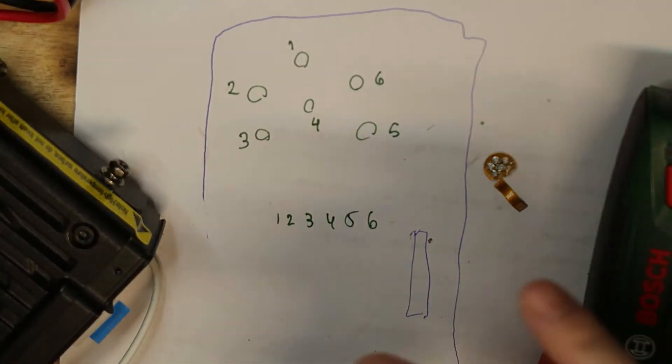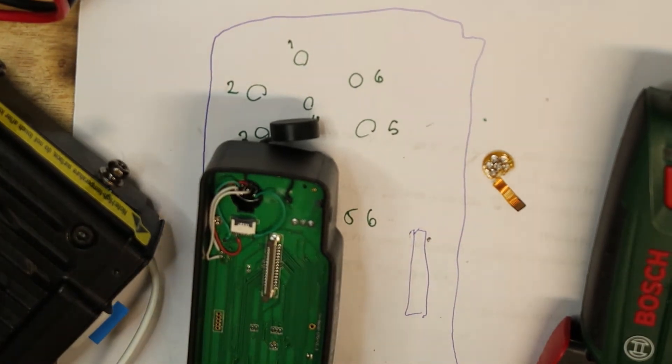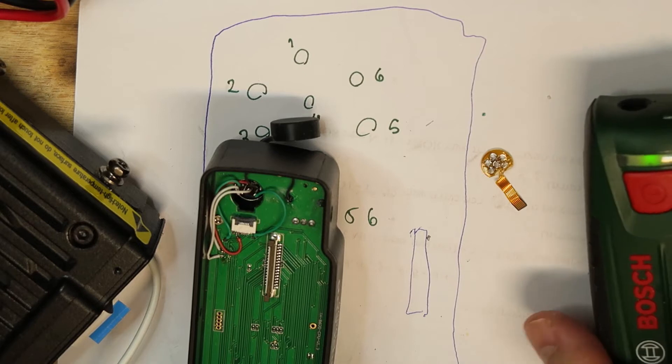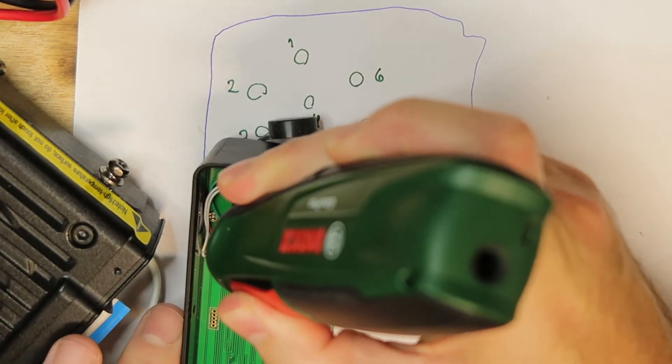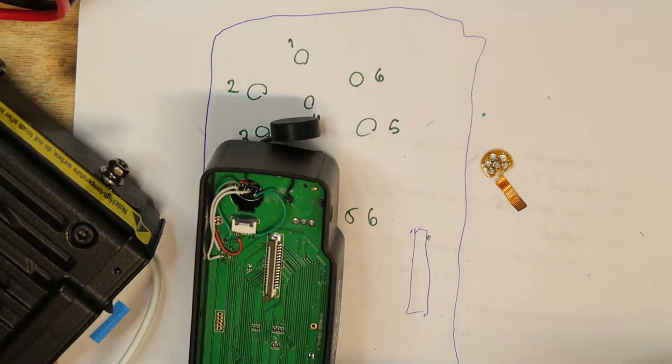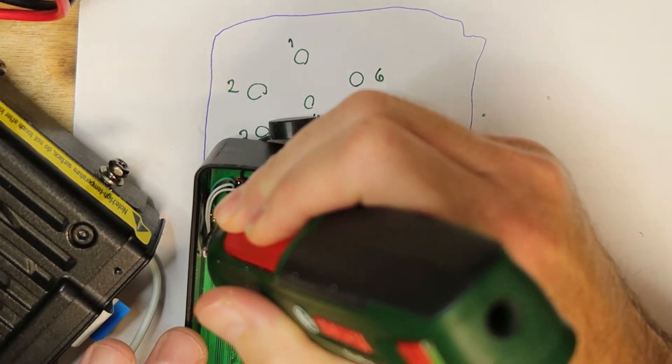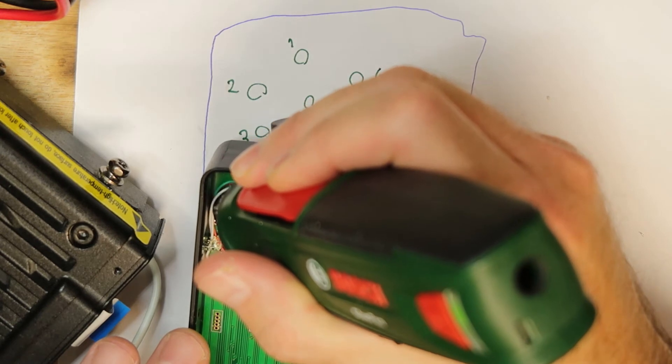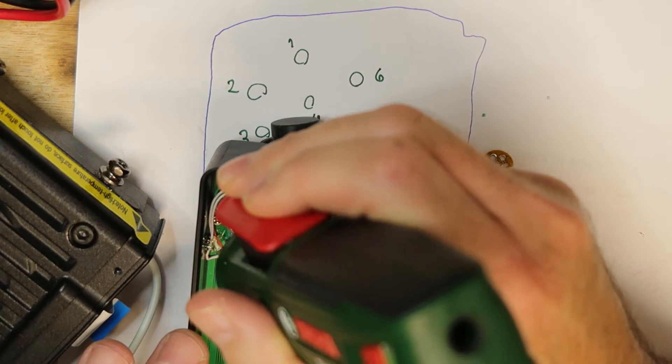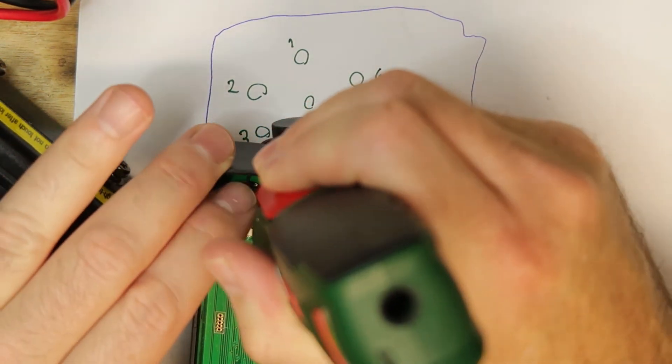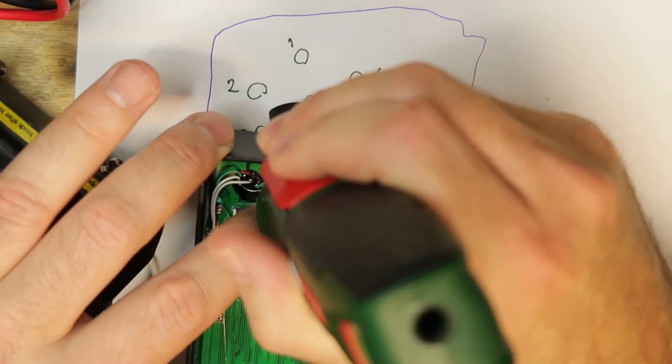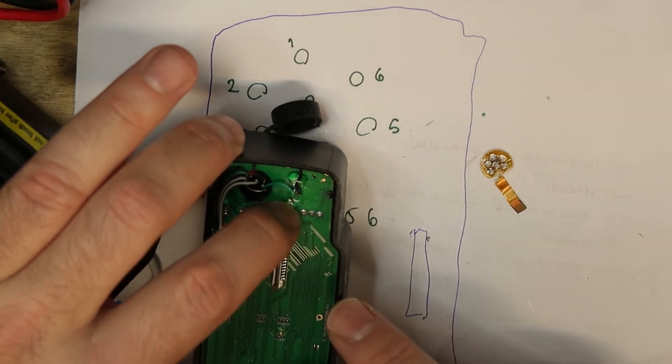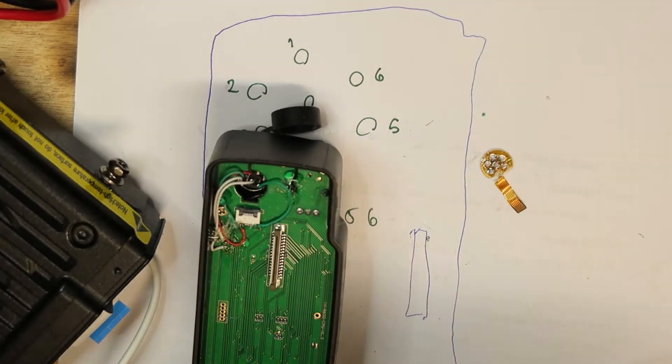Now I will put the hot glue near my wires to catch them. What I will do is put it a little away from the soldering point, because if something goes off I want to be able to see it. Okay, I think this will be enough. Now we'll wait a few seconds till the glue cools off.